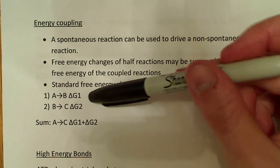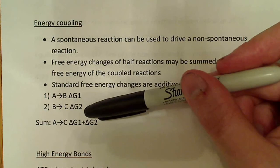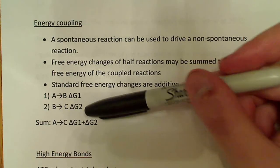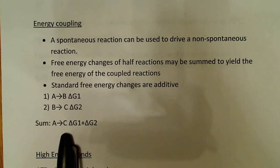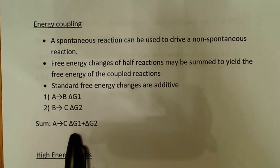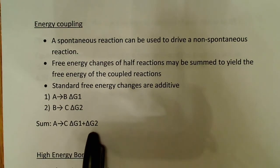So if I have this reaction here — A to B, that's my delta G1, and then I have B to C, that's delta G2 — I want to couple these two reactions together to make A to C. In order to calculate the free energy, I'm just going to add delta G1 plus delta G2. That's what I mean by standard free energy changes are additive.